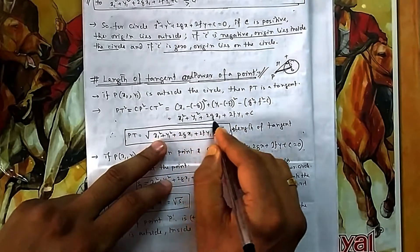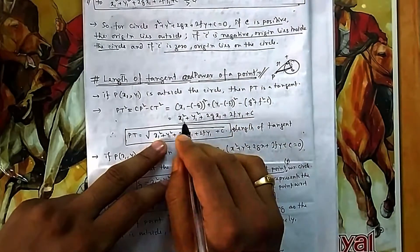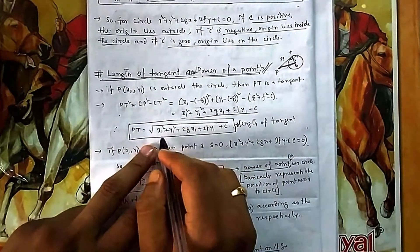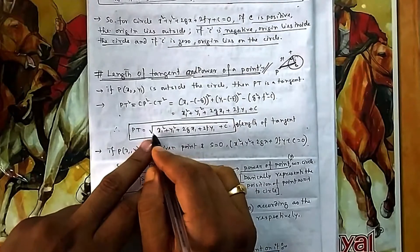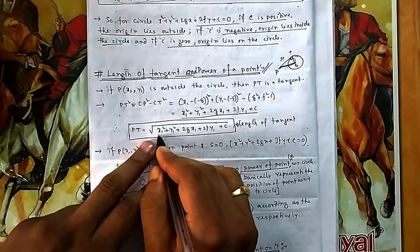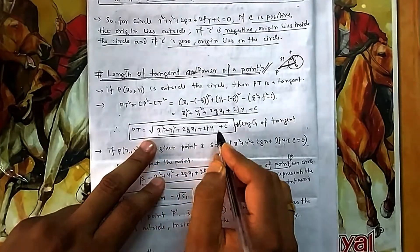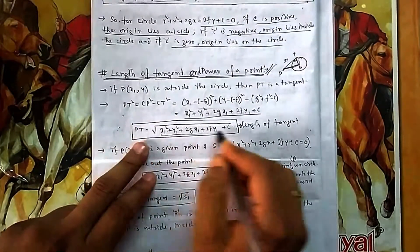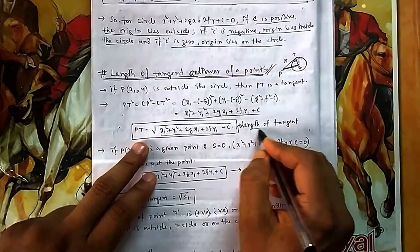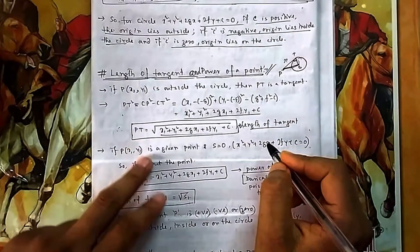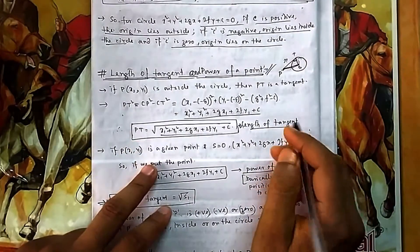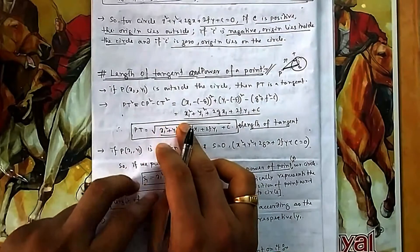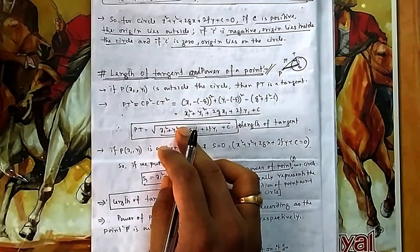You can see that when you substitute the point (x₁, y₁) into the circle's equation, you get the value of PT². So the length of the tangent PT equals √S₁ — you simply put the external point into the equation and take the square root to find the tangent length.